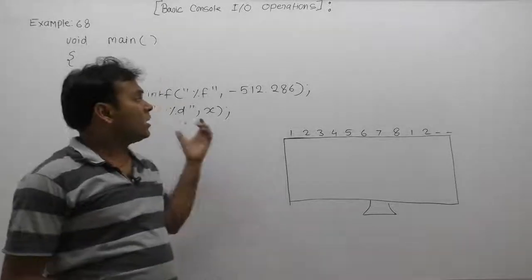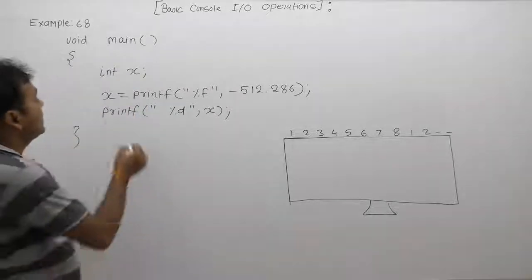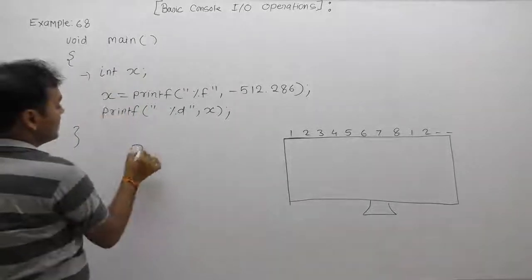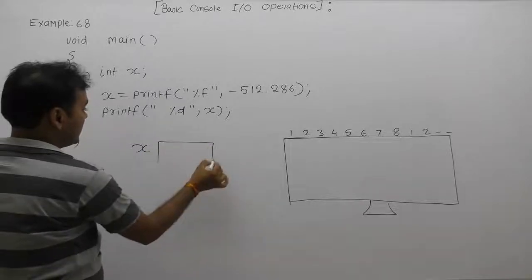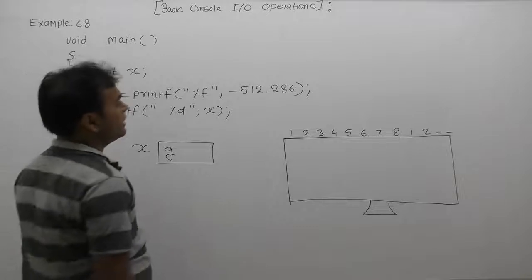Next, what will be the output of the given example application? Here we are declaring a variable as x. Again, the initial value of x is garbage. Then printf, according to printf...